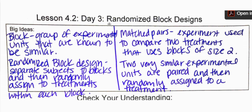We're going to talk about a completely randomized block design for experimentation. We have talked about completely randomized experiments, and now we're going to talk about blocks. A block is when you have a group of experimental units that are known to be similar. This is similar to when we talked about simple random samples or stratified random samples — those are sampling. This is experimentation.